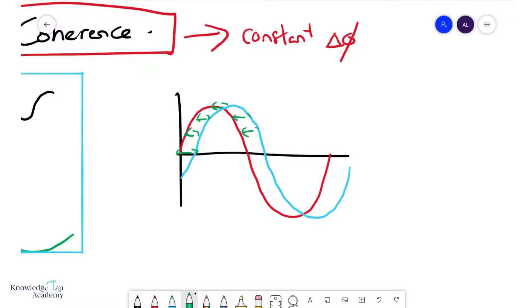Bear in mind that coherent waves do not need to have the same amplitude. So for example, this wave could have something like this. It could be a wave of much smaller amplitude, and it would still be coherent with the red wave, as you can see.